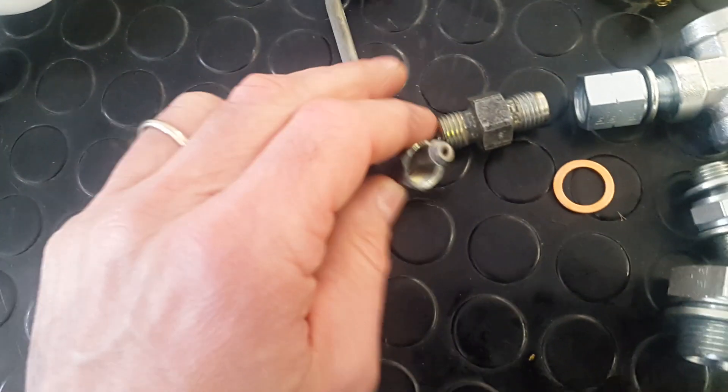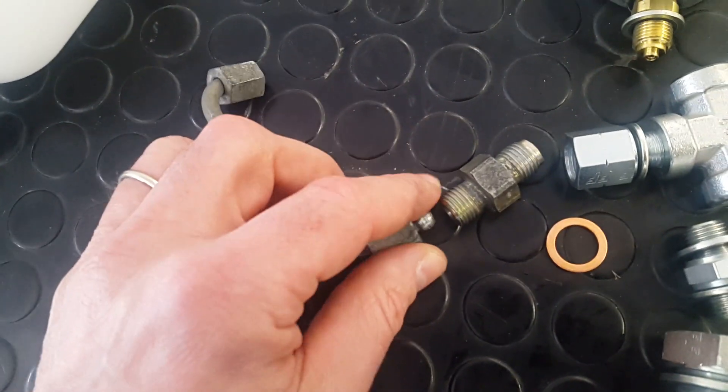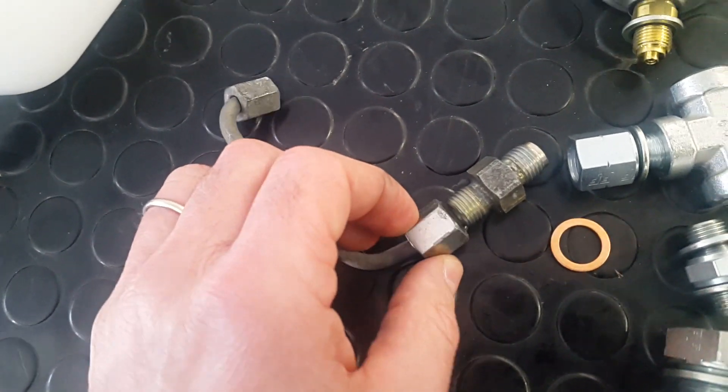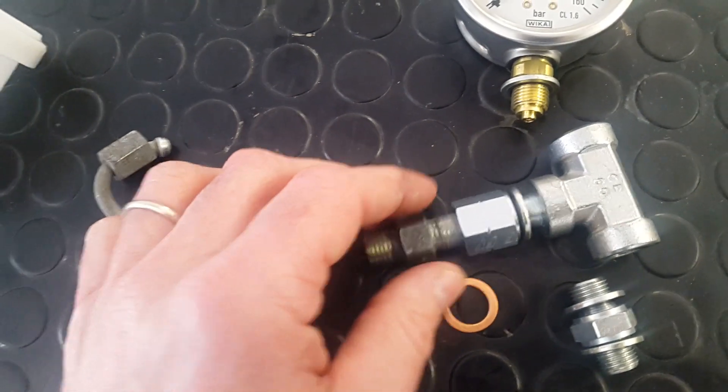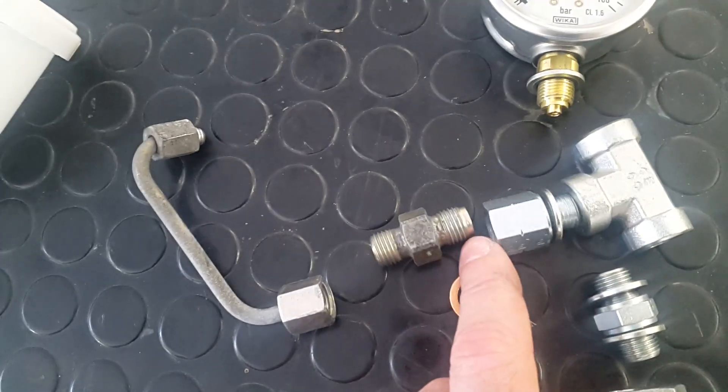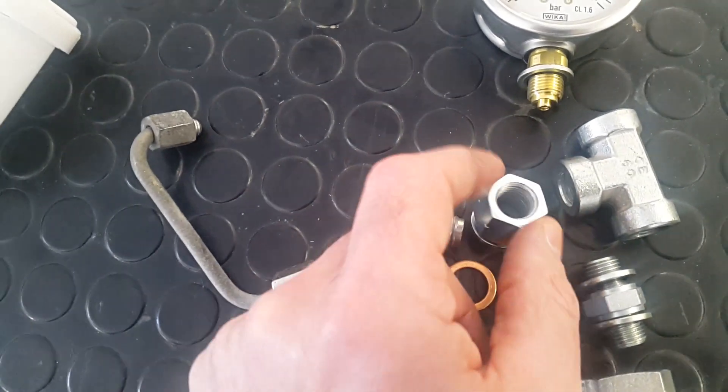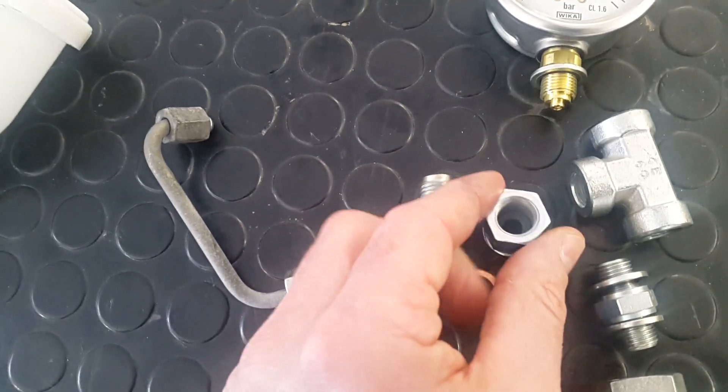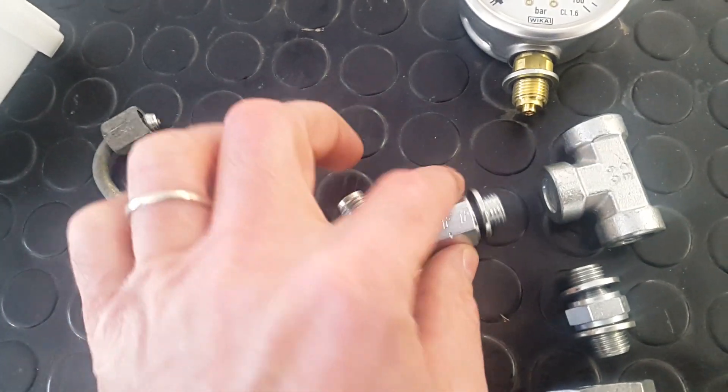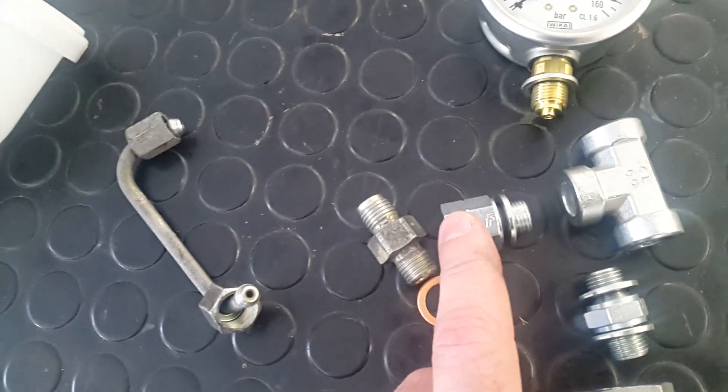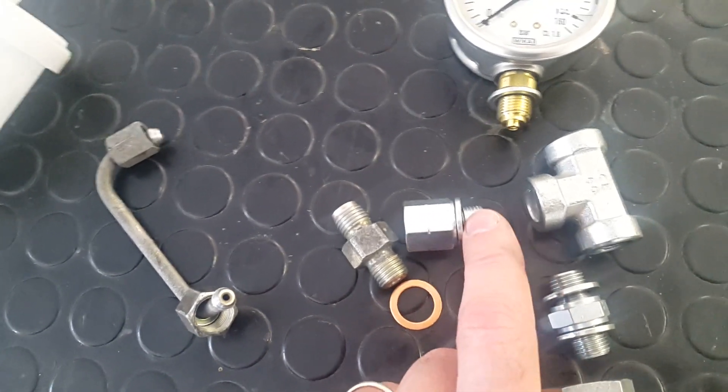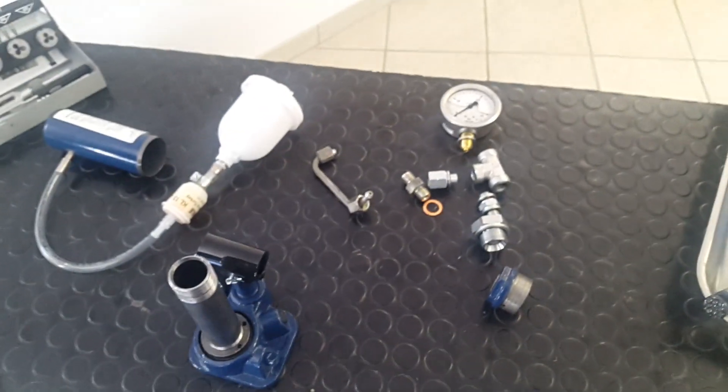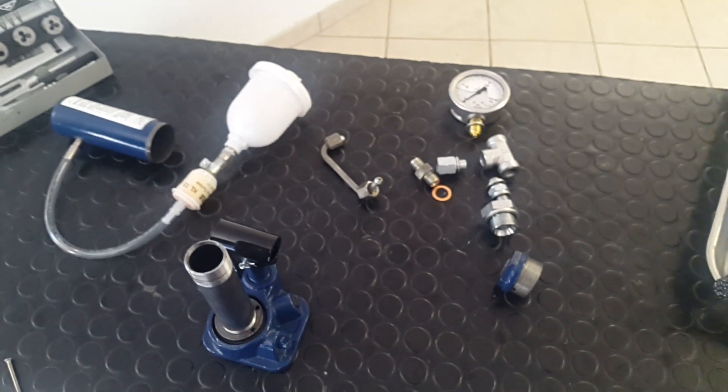So I have a nipple male-male, and then my switching here from male to female. Also in this case, it's metric threads: M14 for 1.5. What is important here is we are switching from metric threads to British oil and gas thread, one-quarter. So this is my idea, and I'm soon putting everything together and I'll show you the final result.